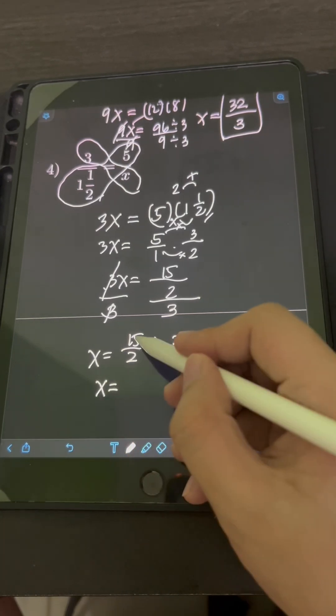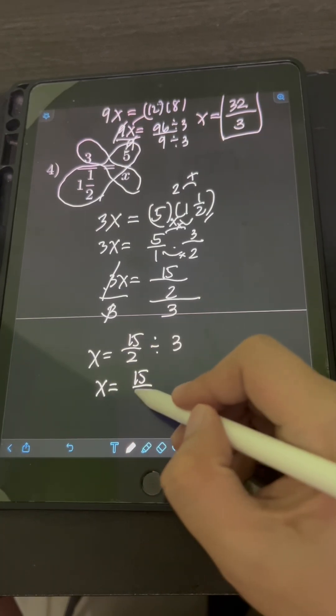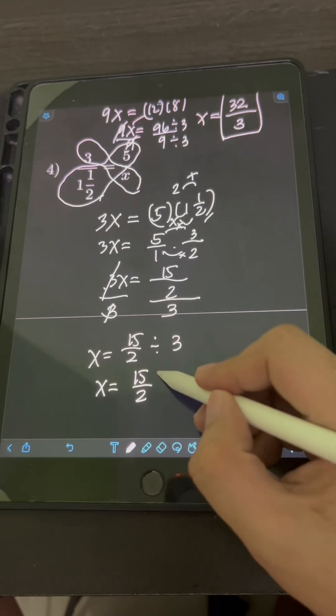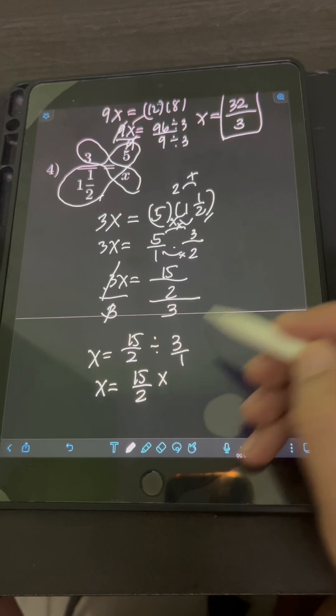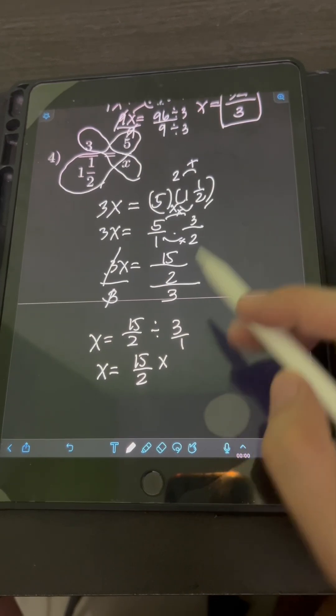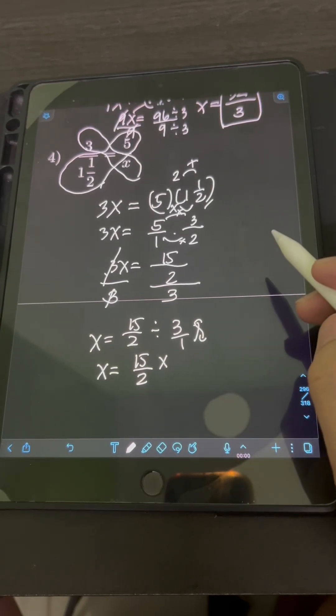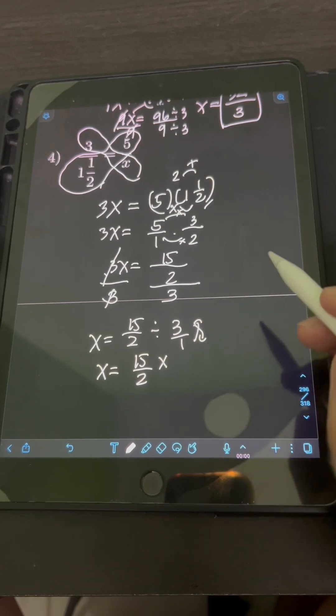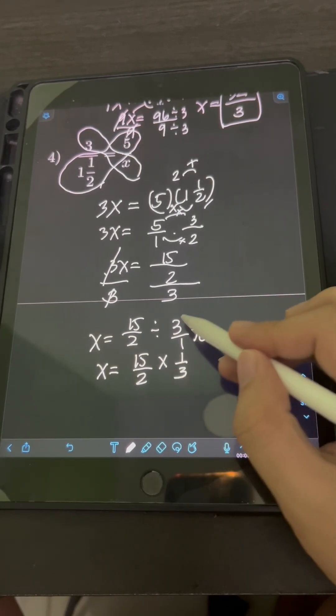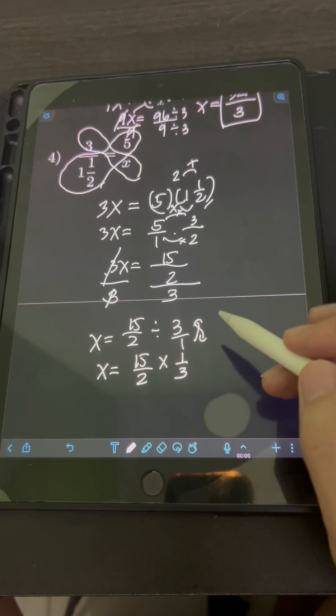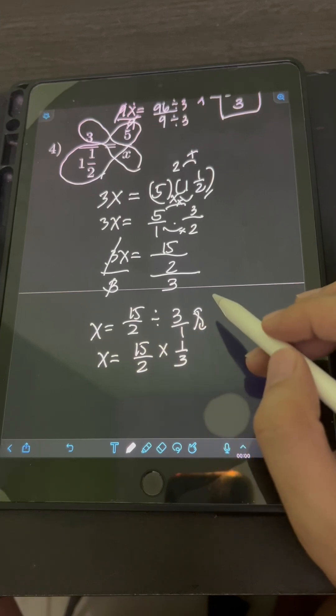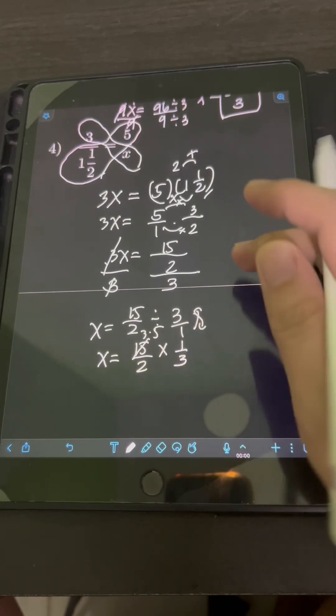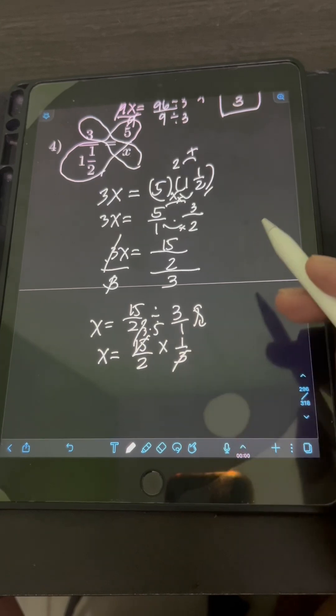This time, we just copy the first fraction, 15 over 2, then change the operation to multiplication, and then get the reciprocal of the second fraction. So this 3 can be a fraction by having a denominator of 1. So getting its reciprocal, interchanging the position of the denominator and the numerator, we have reciprocal of 3 over 1 as 1 third. And then we can multiply now. By the way, we can apply cancellation here. We factor out the 15 as 3 times 5, so we can cancel out this 3.